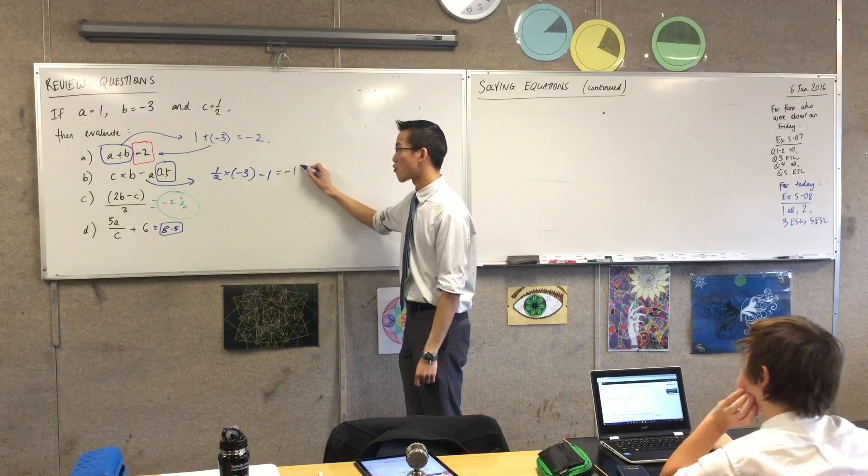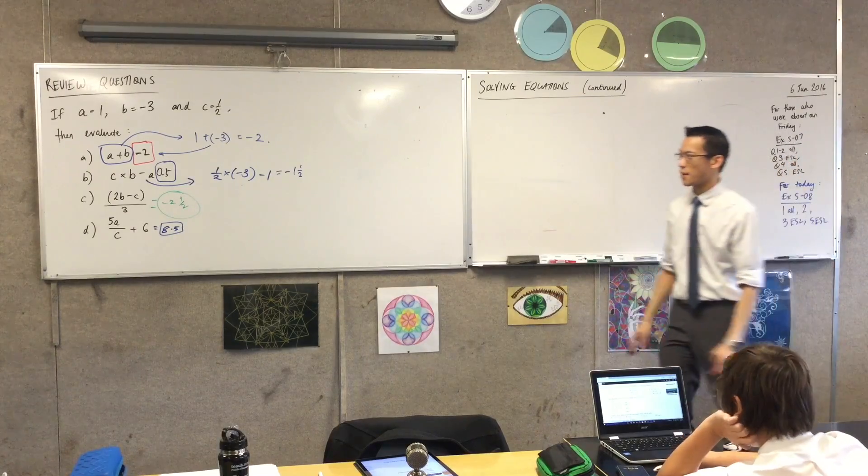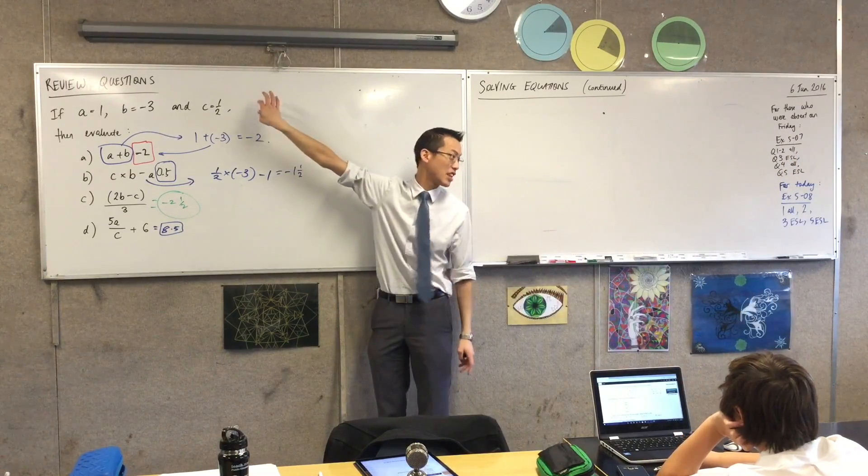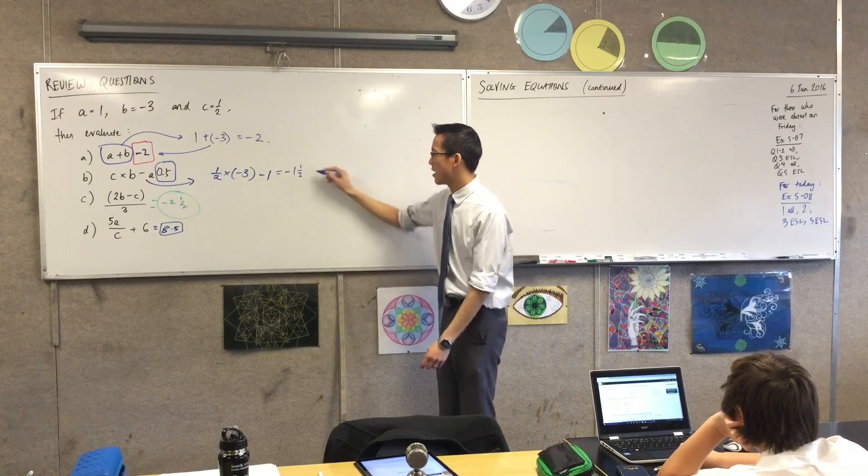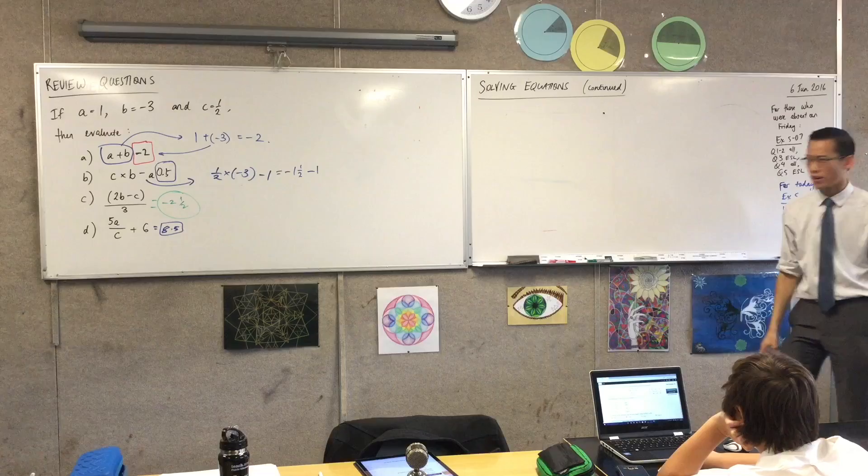Negative 1. I'm going to write it as negative 1 and a half. Negative 1.5 is the same, we've seen these in the same idea, but I started with fractions, so I'm going to do that look okay? Yeah. Okay.